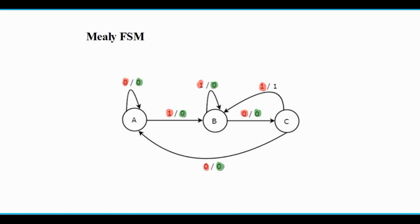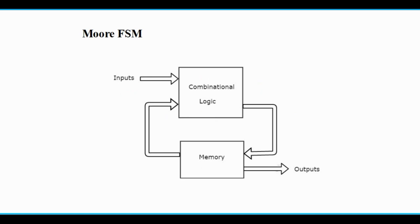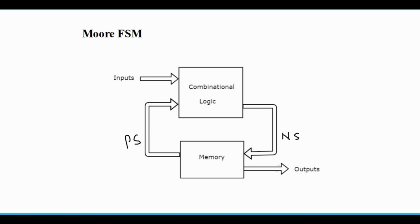Now we will discuss about Moore FSM. The block diagram of a Moore FSM looks similar to a Mealy FSM. Like a Mealy FSM, Moore FSM is also a synchronous sequential machine. The difference is that in a Moore FSM the output depends only on the present state — it does not depend on the present input. The present input is only used for transitions. This present state determines the output, and the next state is determined by the present input.